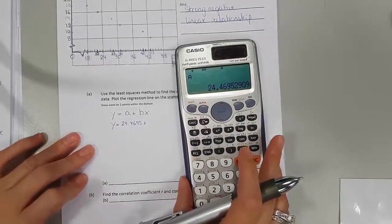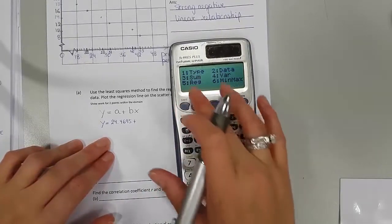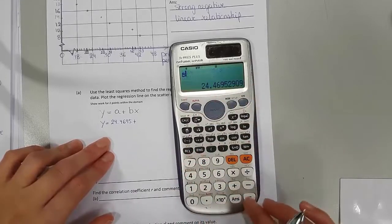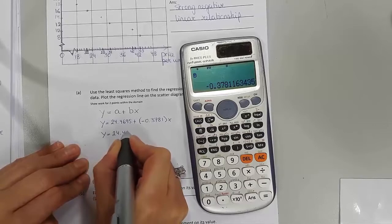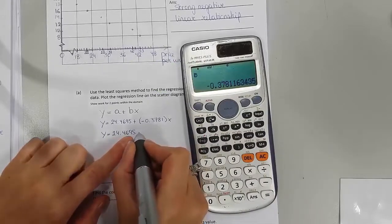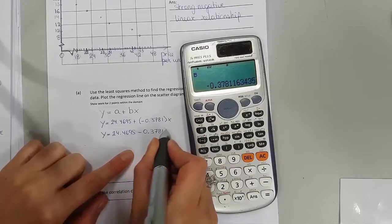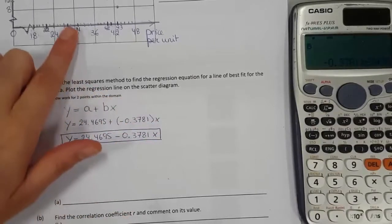Now let's also find our B. Shift, stat, regression, B, so 2. So our regression equation is 24.4695 minus 0.3781x.